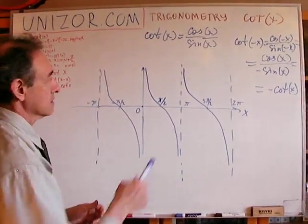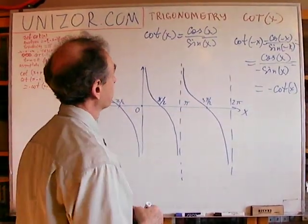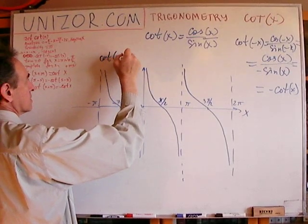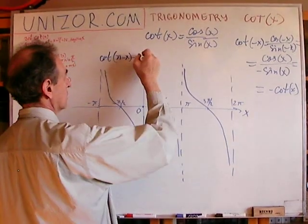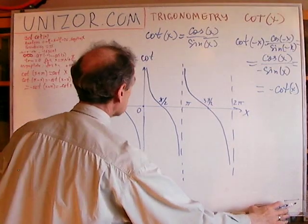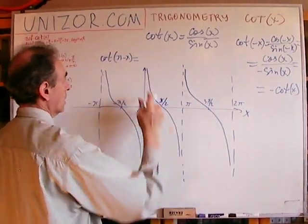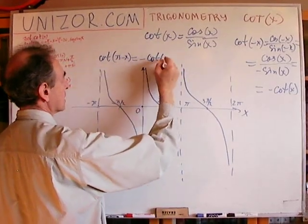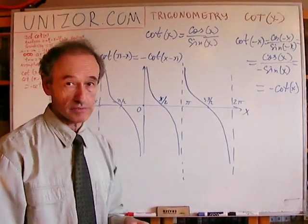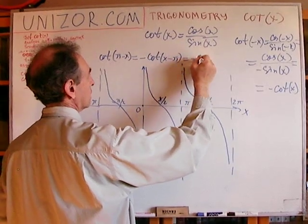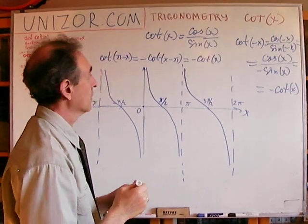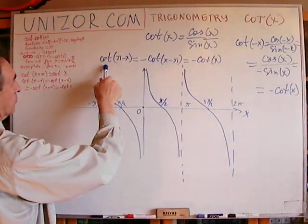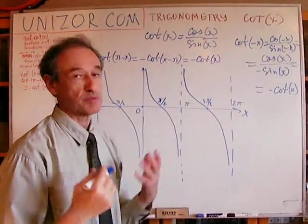Now, since we have this property of the cotangent to be an odd function, then let's address this cotangent of π minus x. What is it equal to? Well, let's change the sign. It's equal to minus since it's an odd function. It's minus cotangent of x minus π. Right? We change the sign of the argument from π minus x we put x minus π. Now, since cotangent is a periodic function we can add π and we will get minus cotangent of x. So, π minus x is minus cotangent of x. π plus x or x plus π it's the same as cotangent of x because π is a period.